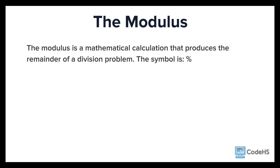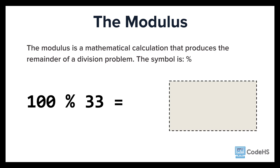A common mathematical function used in cryptography is the modulus function. This function is simple to use and the output hides the input really well. The modulus is a mathematical calculation that produces the remainder of a division problem. The symbol used is the percentage symbol. The equation on the screen can be read as 100 mod 33. We want to find the remainder if we divided 100 by 33. Well, 33 goes into 100 three times, and 33 times 3 gives us 99. This gives us a remainder of 1, since 100 minus 99 is 1.